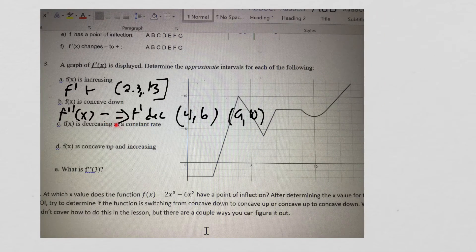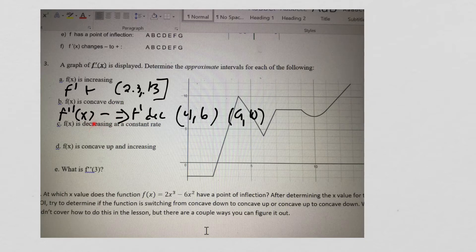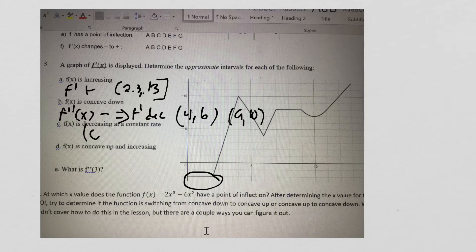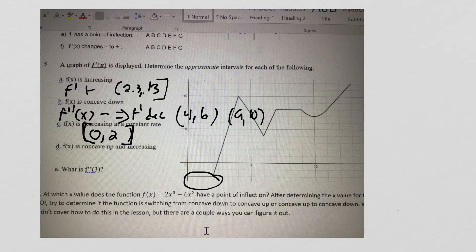f of x is decreasing at a constant rate. It's decreasing implies f' is negative. Constant means f' is not changing. So that happens right here. So we'll just say from x equals 0 to x equals 2, we are decreasing at a constant rate. I guess we should actually include these because at 0, it's decreasing. At 2, it's decreasing with a slope of negative 2.